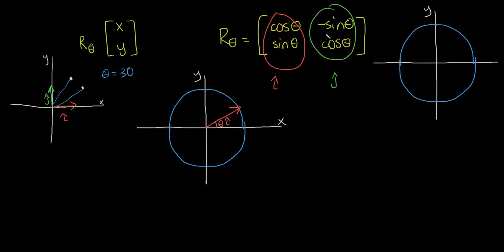Now, negative sine of theta, cosine of theta. This doesn't really make sense initially, but I want it to make sense. And to explain it, I want to explain something about the axes.